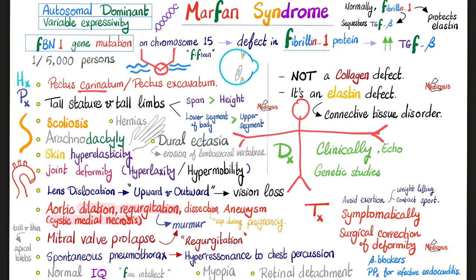To diagnose Marfan syndrome: history and physical exam, echocardiogram for cardiac problems, and genetic testing. Management is symptomatic — correct each feature and prevent complications. Beta blockers are used for heart and vessel symptoms; surgical interventions address deformities like scoliosis and hernias. Because the aortic and mitral valves are affected, prophylaxis for infective endocarditis is needed. Routine repeated echocardiography is required, especially during pregnancy due to hyperdynamic circulation from increased plasma volume.